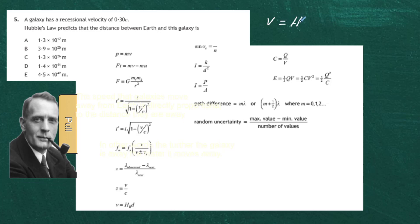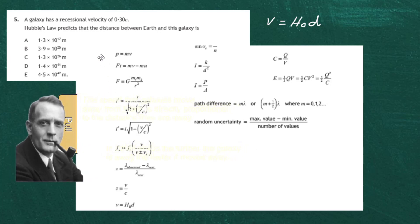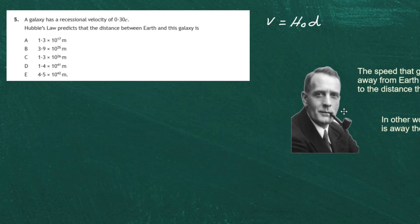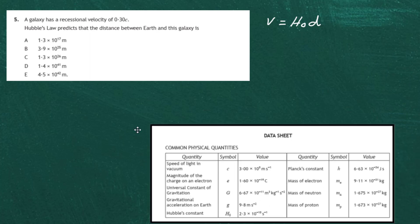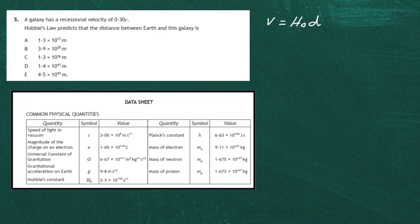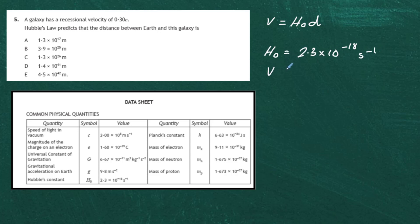With the relationship sheet set aside, we have the equation v equals h-naught d. Hubble's constant can be looked up in our data sheets: h-naught is given the value of 2.3 times 10 to the minus 18 seconds to the minus 1.